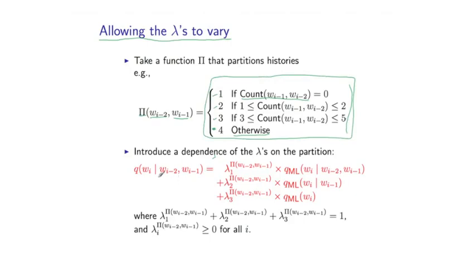Now, once we've defined this partition, we give a slightly refined version of linear interpolation, where these lambdas vary depending on the value for π. I now have parameters lambda 1 sub 1, lambda 1 sub 2, lambda 1 sub 3. And these three parameters are used if the count of the bigram is equal to 0. I have parameters lambda 2,1, lambda 2,2, lambda 2,3. I use these three parameters if the count is between 1 and 2, and so on. Notice that these lambdas now vary depending on which partition the bigram falls into.